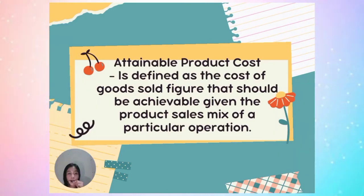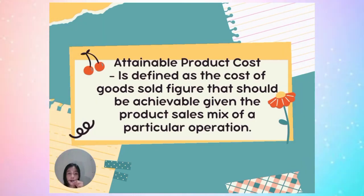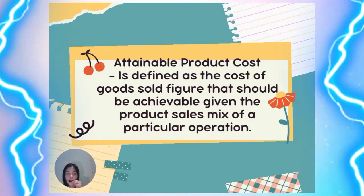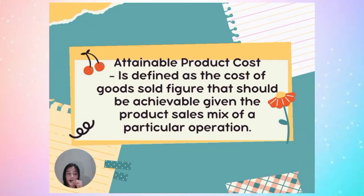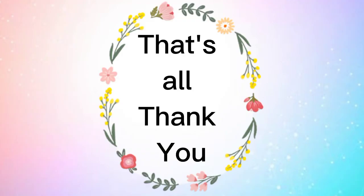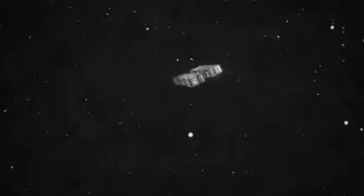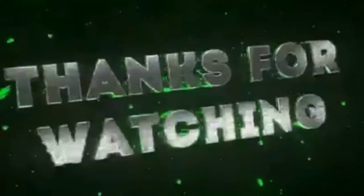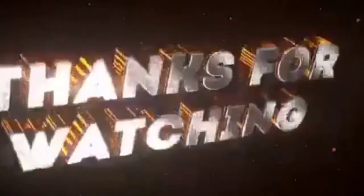Attainable product cost is defined as a cost-of-goods-sold figure that should be achievable given the product sales mix of a practical operation.